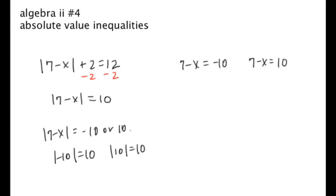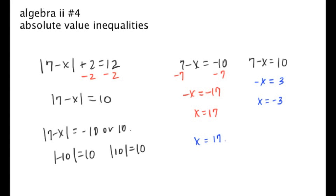So we're going to solve these equations quickly. We subtract 7 on both sides: we get negative x is equal to negative 17, so x equals positive 17 on this side. And on the other side, we get negative x is equal to 3, which means x equals negative 3. So the solution is x is equal to 17 or negative 3. We could plug these values back into the original equation and we would get 12 for both.